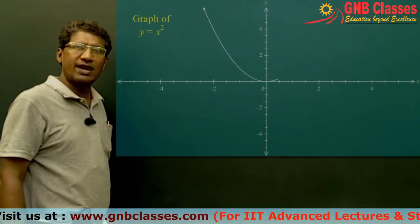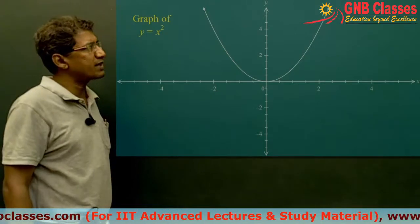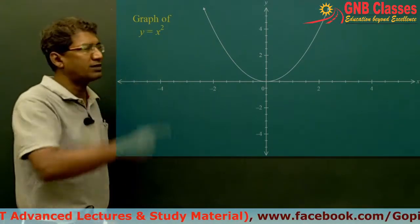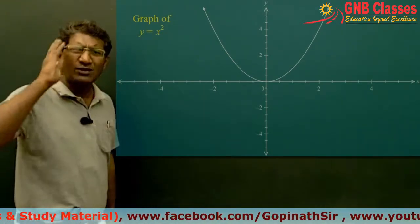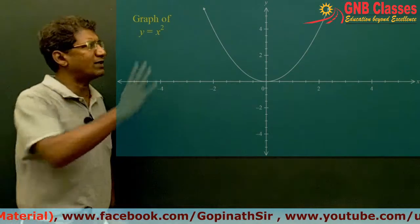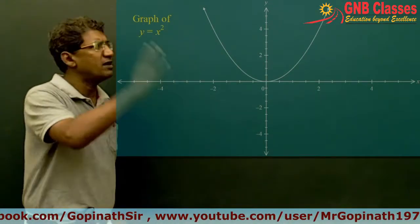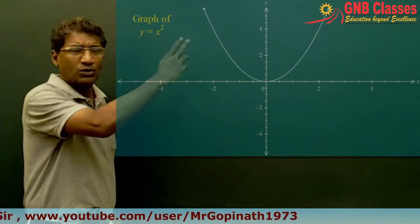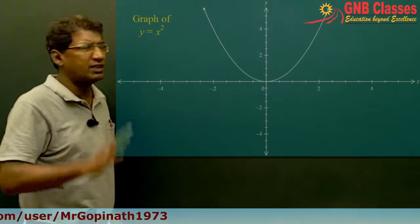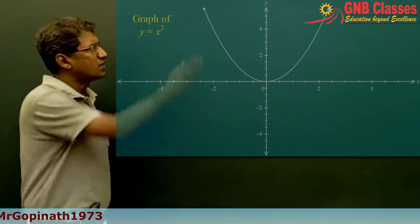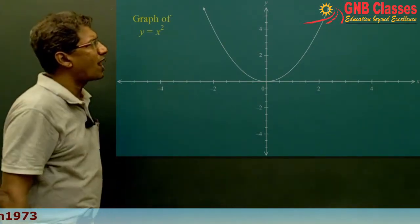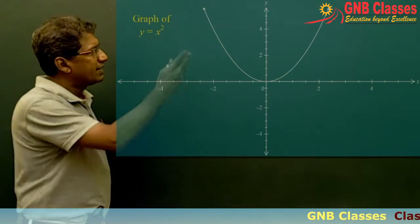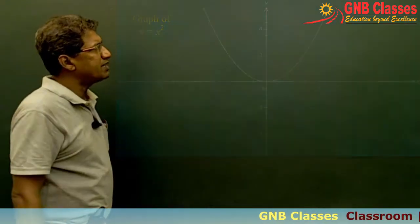The second graph is y = x². In geometry we call this a parabola. Don't try to remember the name right now — just remember the curve for the time being. This is your y = x².